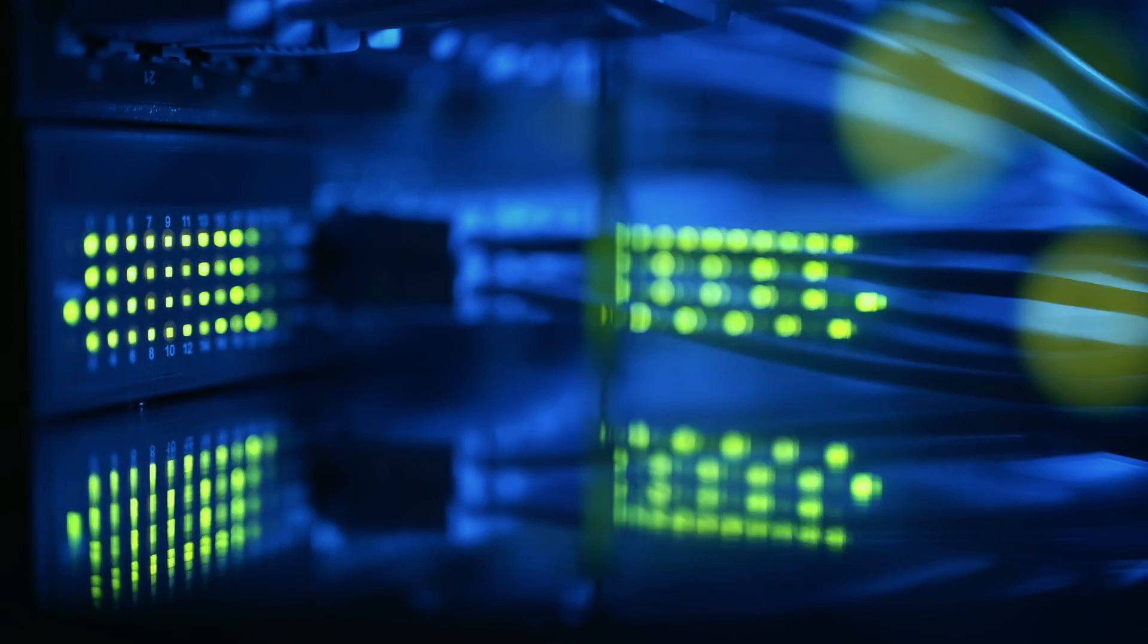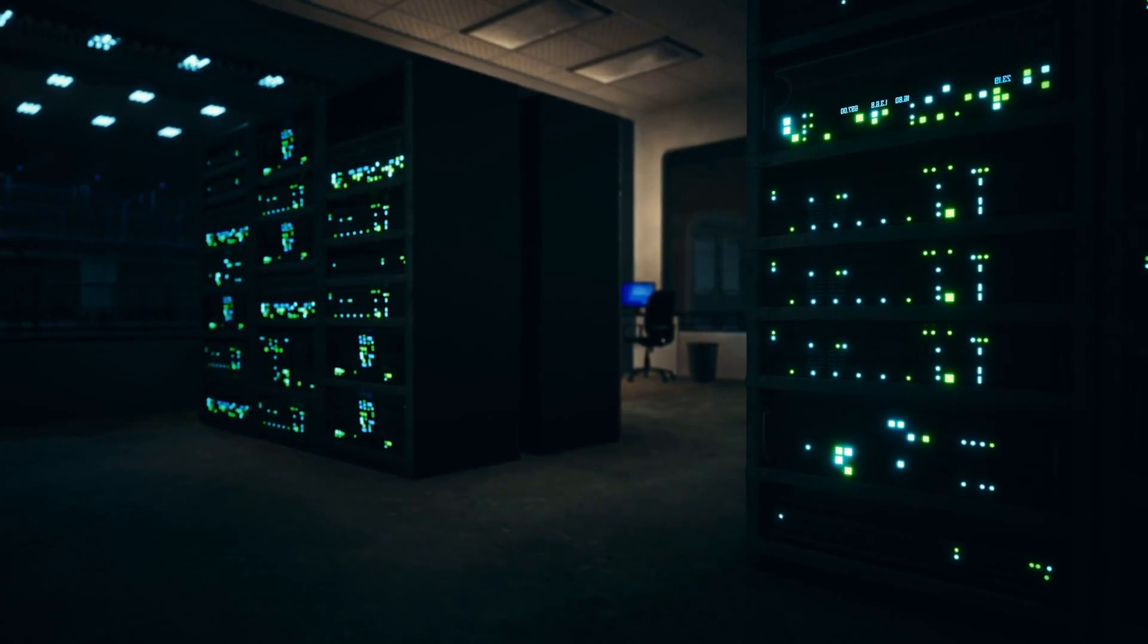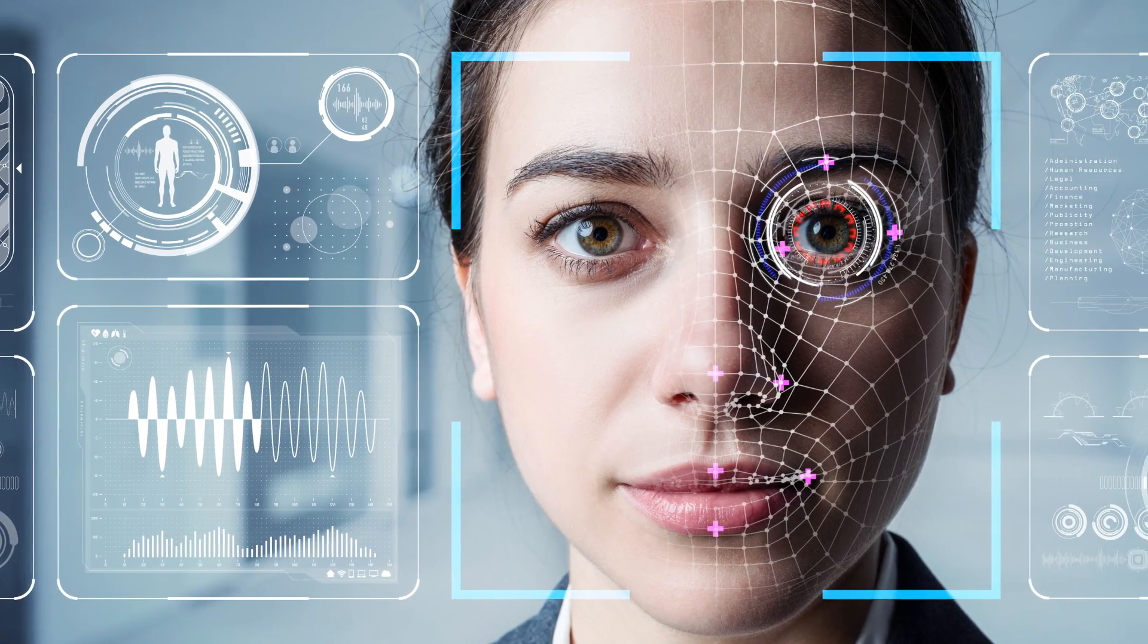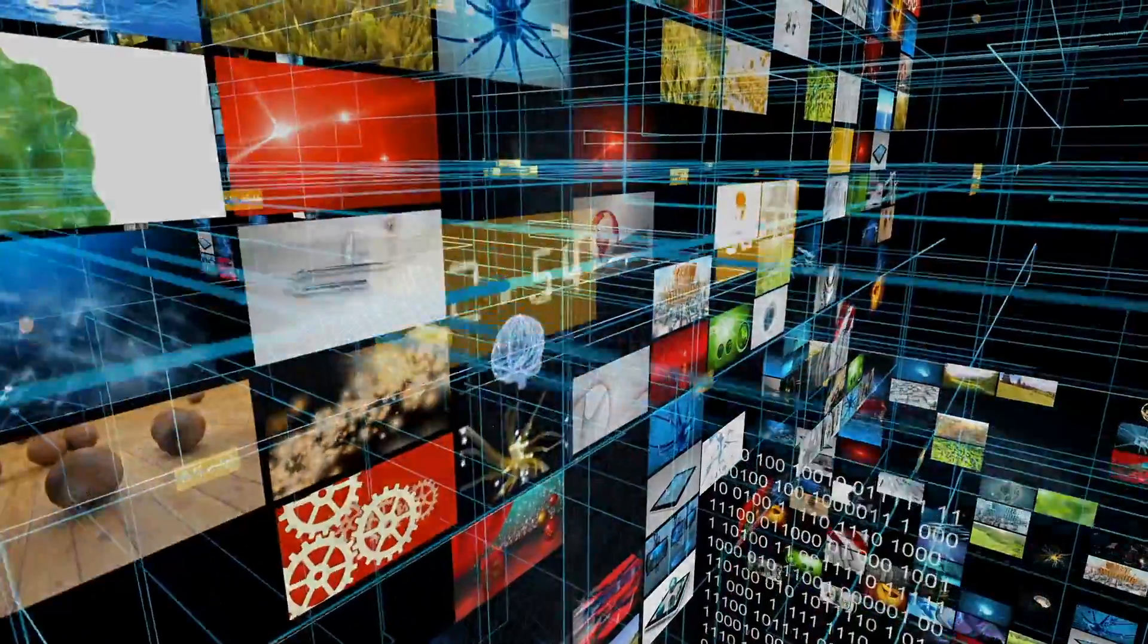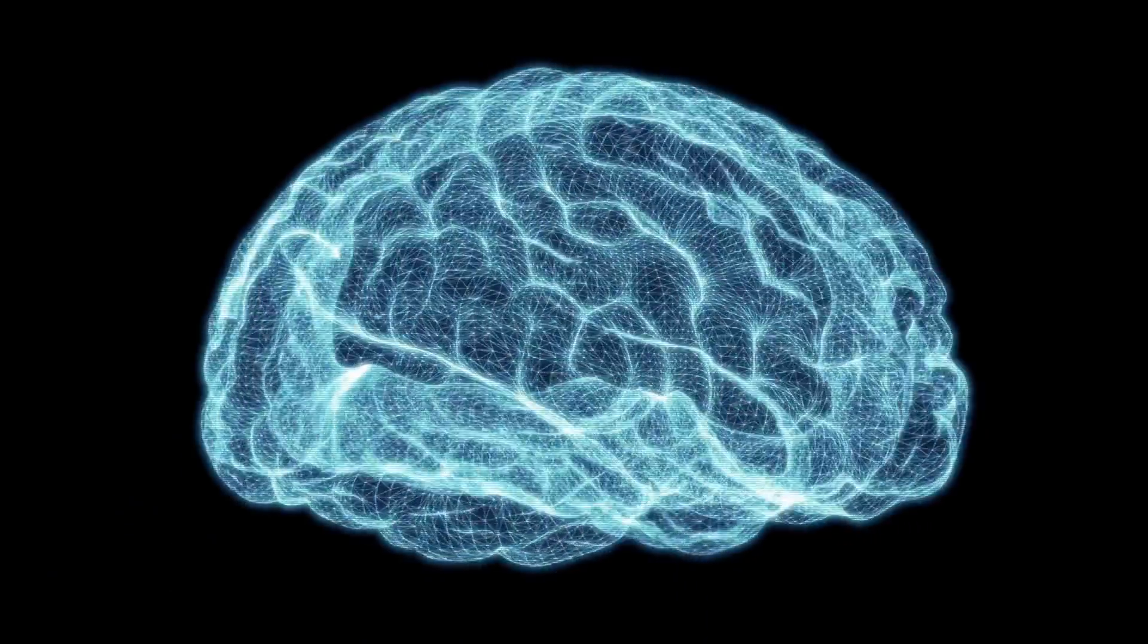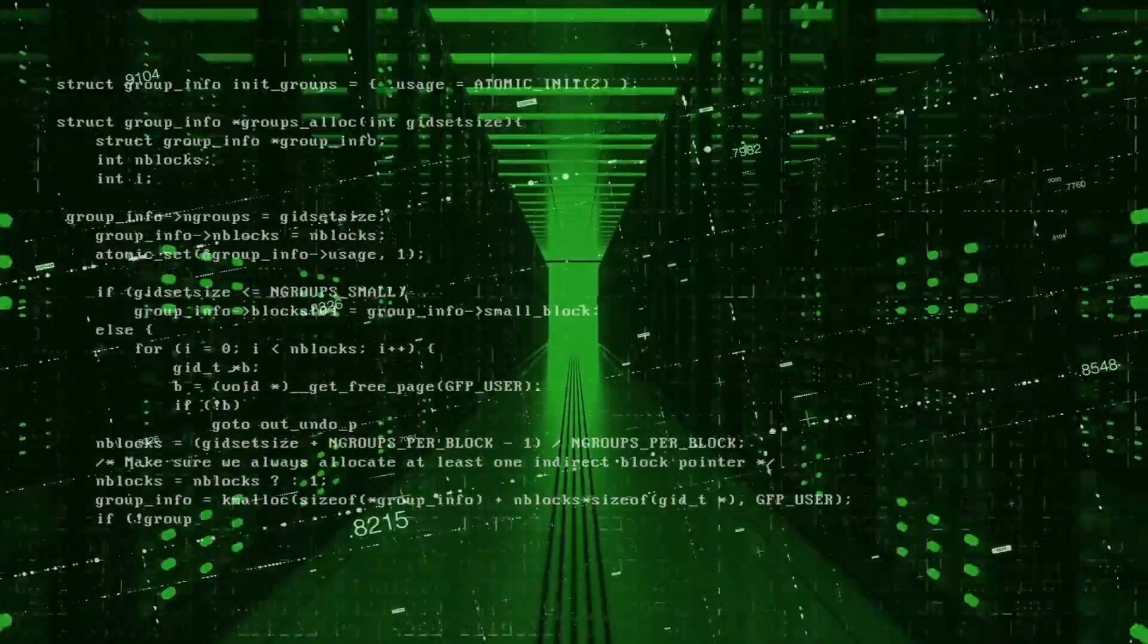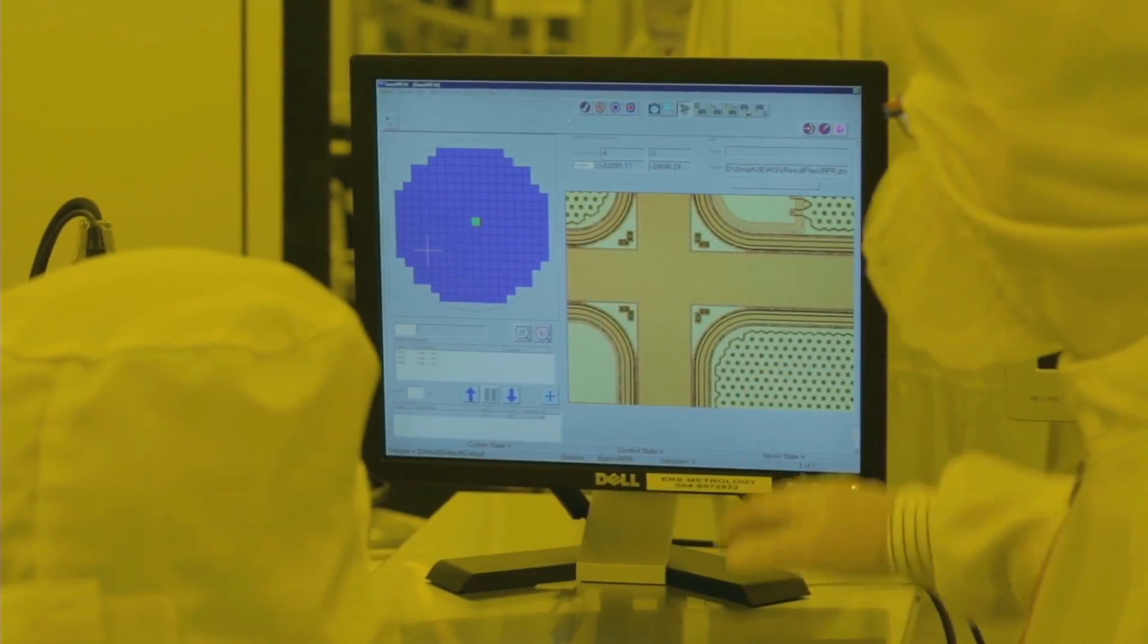Now what do you need in order to hack a human being? You need two things: you need a lot of computing power and you need a lot of data, especially biometric data—not data about what I buy or where I go, but data about what is happening inside my body and inside my brain. Until today, nobody had the necessary computing power and the necessary data to hack humanity, but this is now changing.